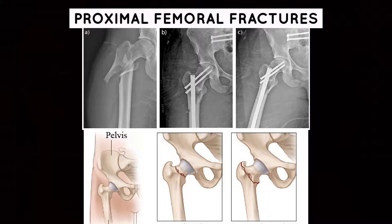So let's dive right into our discussion of proximal femoral fractures. Proximal femoral fractures are a heterogeneous group of fractures that occur within or around the hip.